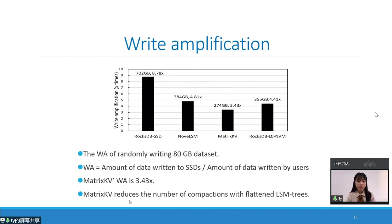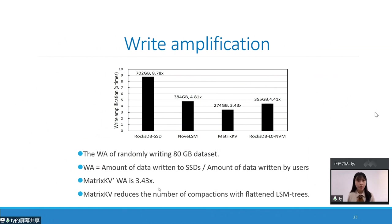We show the write amplification of randomly loading an 80GB dataset. Test results show that by flattening the LSM tree, MatrixKV reduces write amplification compared to the other three systems — achieving 3.43 times lower write amplification. Write amplification is calculated as the ratio of the amount of data written to SSD to the amount of data written by users.